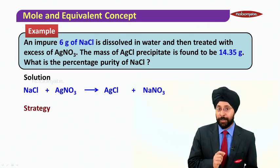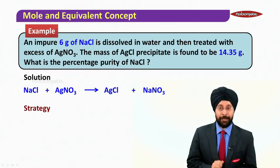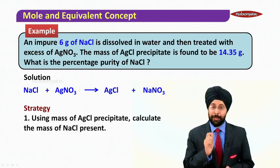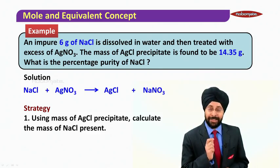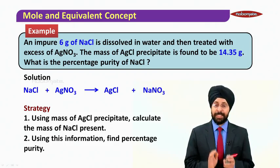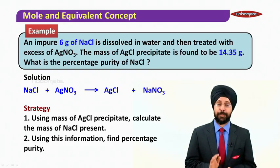Whatever AgCl precipitate has formed corresponds to the actual NaCl present. So using the mass of AgCl precipitate, we will first calculate the mass of NaCl that is present and then using this information we find the percentage purity.